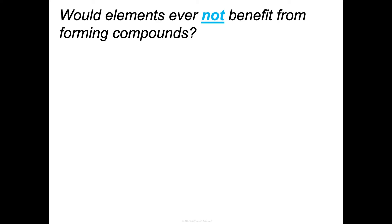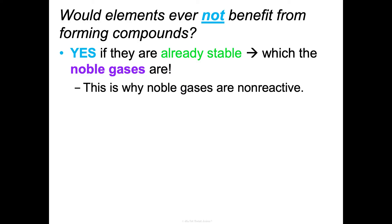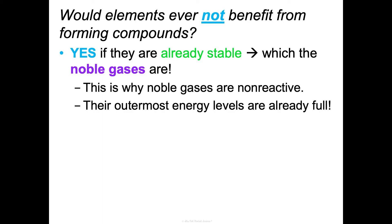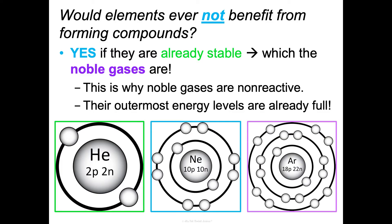Would elements ever not benefit from forming bonds? Yes — if they're already stable. That's what we see in the noble gases. Noble gases are non-reactive because they don't need to undergo chemical reactions — they're already stable because their outermost energy levels are already full. That applies to helium, neon, argon, and all of Group 18 on the periodic table.